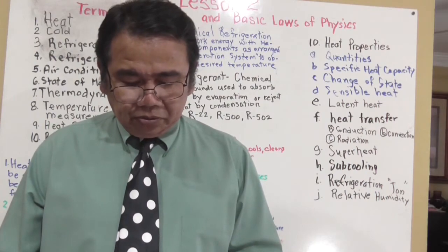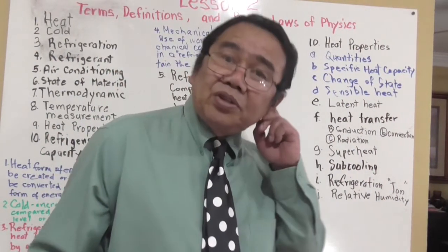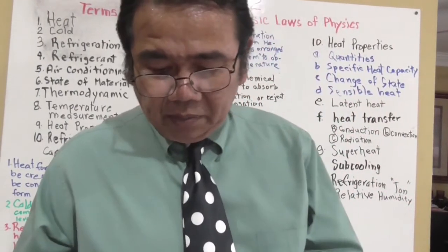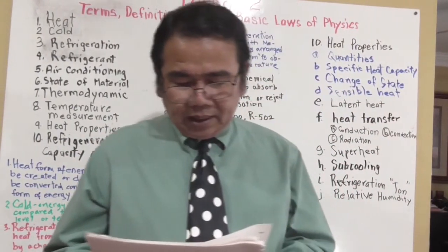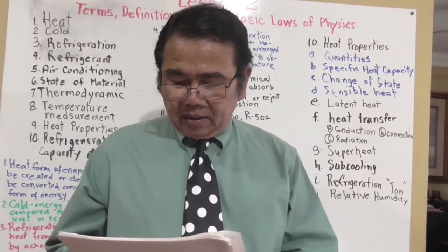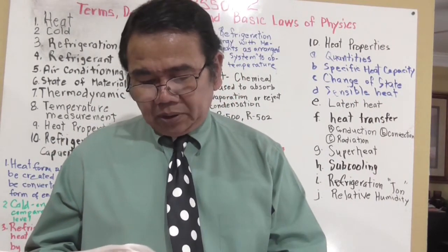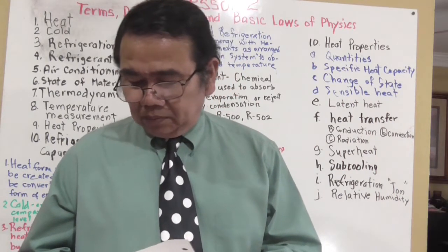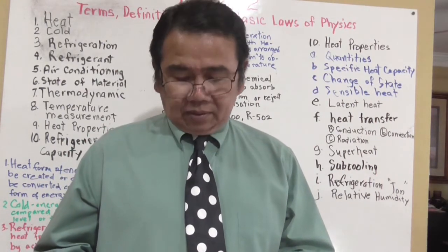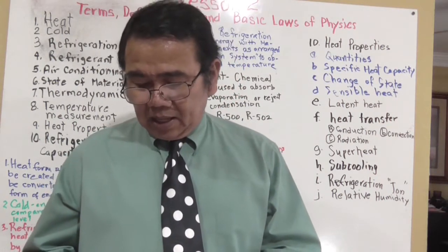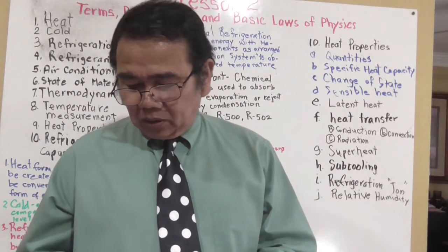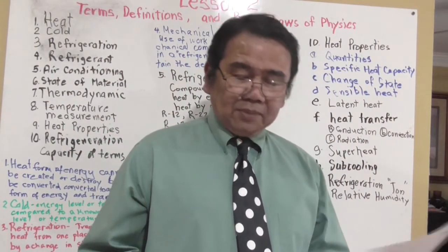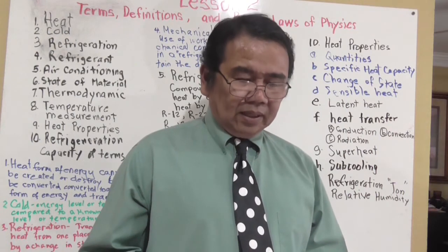Radiation uses waves similar to light waves. The sun's rays heat the air by radiation heat waves. Heat from light bulbs or a stove is radiant heat. Radiant heat is rapidly absorbed by dark or dull materials or substances.